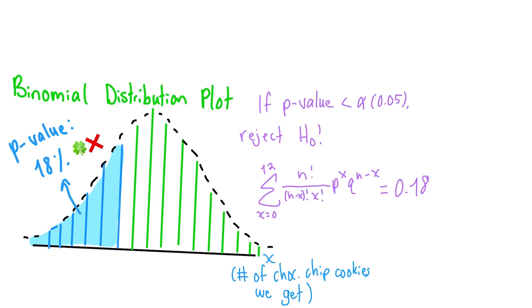In this case, we just got a little unlucky, but 18% isn't so low that I would start to think that maybe there aren't really equal amounts of chocolate chip and snickerdoodle cookies.